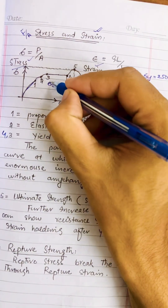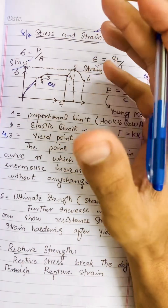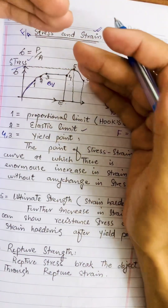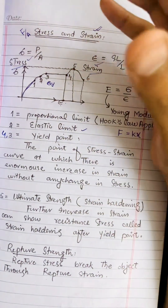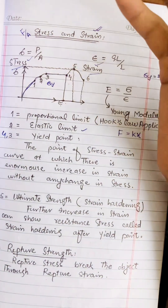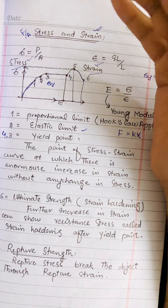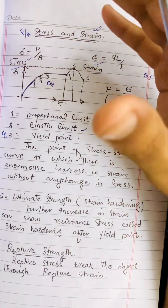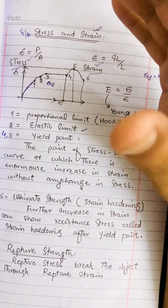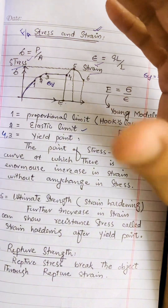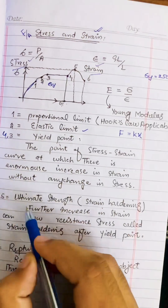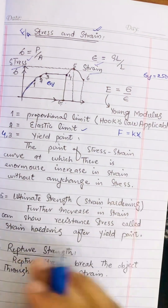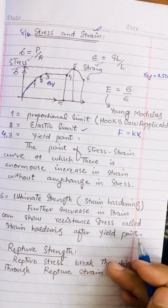Beyond the yield point, the steel is considered unserviceable. Therefore, we use steel only up to the yield point in structural design. After the yield point, further increasing strain causes the material to show resistance — this is called strain hardening — and corresponds to the ultimate strength.